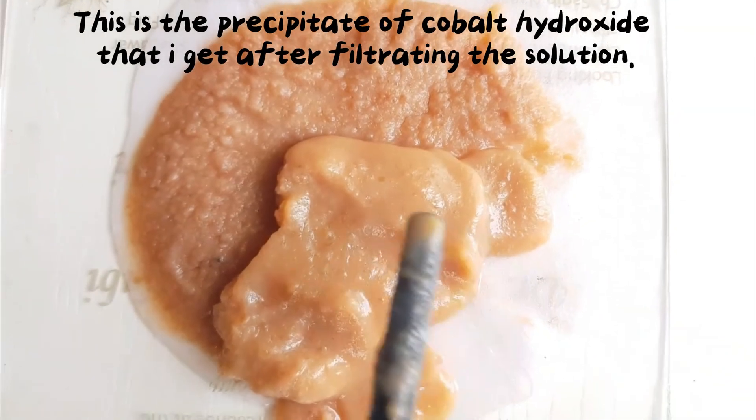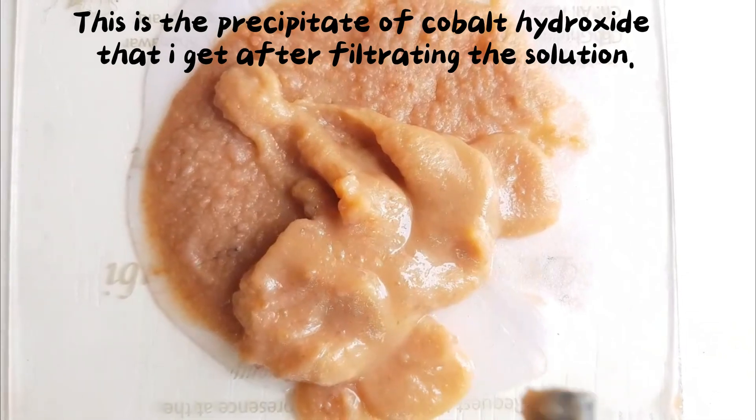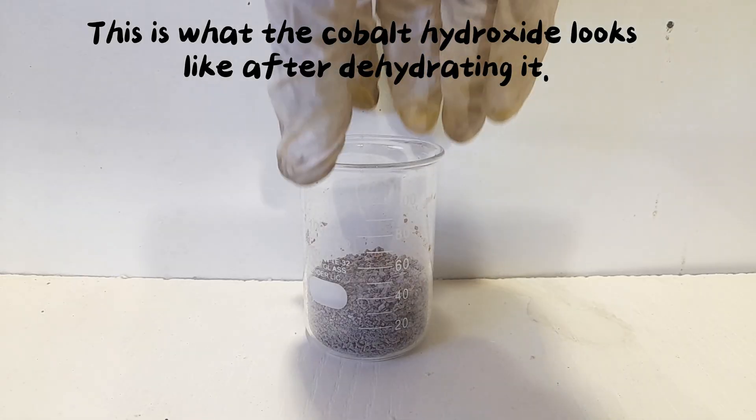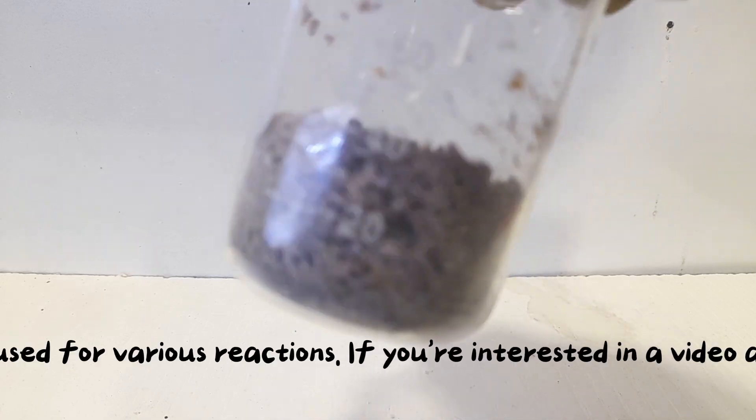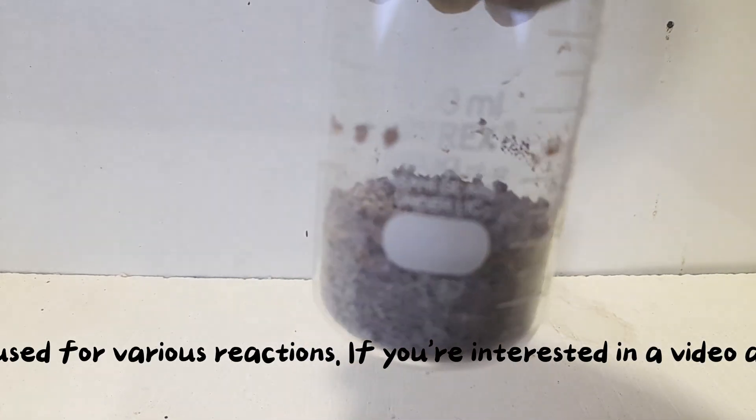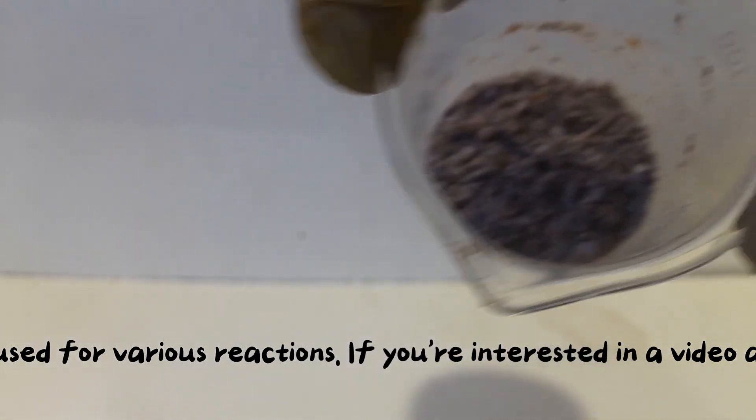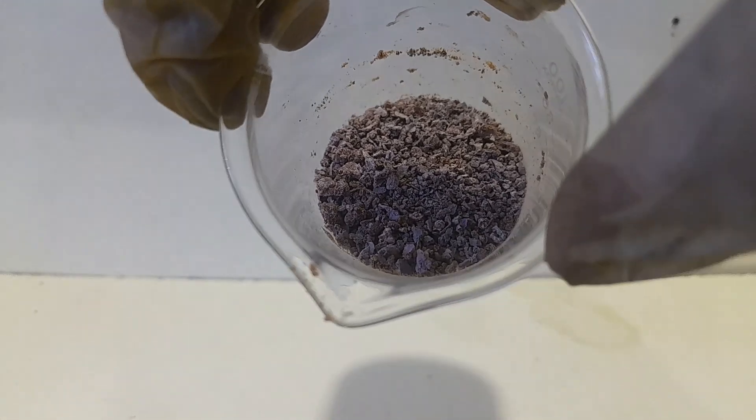This is the precipitate of cobalt hydroxide that I got after filtering the solution. This is what the cobalt hydroxide looks like after dehydrating it. The impurities are still present in both products. They can be used for various reactions. If you're interested in a video about purification of these two products, please comment below.